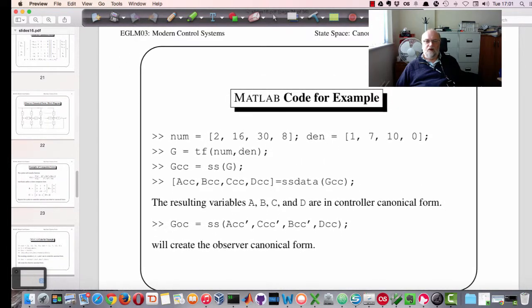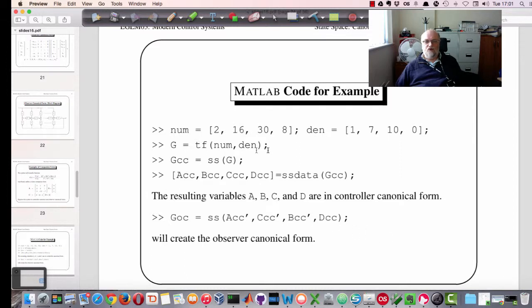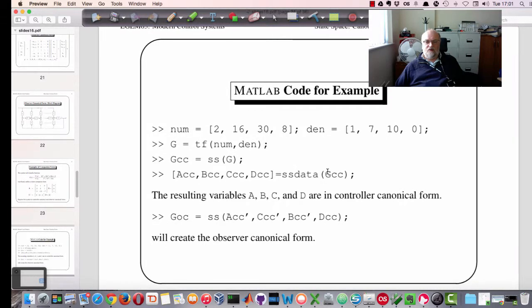This is the example in MATLAB. We're using the transfer function blocks now. So we're taking the numerator denominator, defining a transfer function, and then converting that into a state-space model. We're then getting the A, B, C, D matrix out. And those should be in controller canonical form.